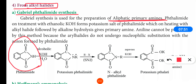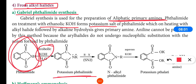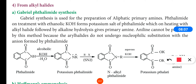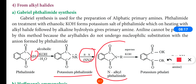Phthalimide on treatment with ethanolic KOH forms potassium phthalimide salt. When potassium phthalimide is treated with an alkyl halide, it will form N-alkyl phthalimide via an SN2 nucleophilic substitution reaction.